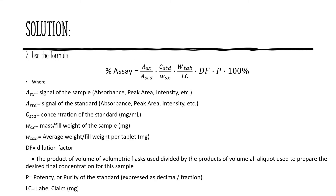Let us now use the formula for a single component assay of a capsule or tablet using instrumental analysis. The assay is equal to the signal of the sample multiplied by the concentration of the standard, multiplied by the average weight per tablet or capsule, multiplied by the dilution factor, times the potency of the standard, times 100%. This product is divided by the signal from the standard multiplied by weight of the sample and the labeled amount.